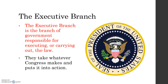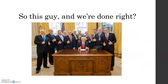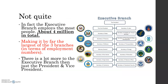The executive branch of government — if you were to explain to a nine-year-old what the executive branch does, it's pretty short and sweet: they're responsible for executing or carrying out the laws that Congress makes — taking whatever Congress puts out and putting it into action. When it comes to the executive branch, it's not just the President and his team. In fact, the executive branch employs the most amount of people in our federal government, about four million job positions in total, making it by far the largest of the three branches.